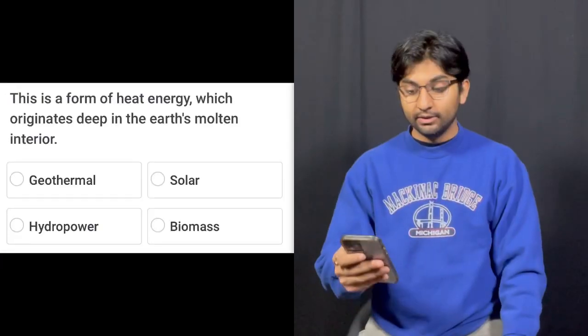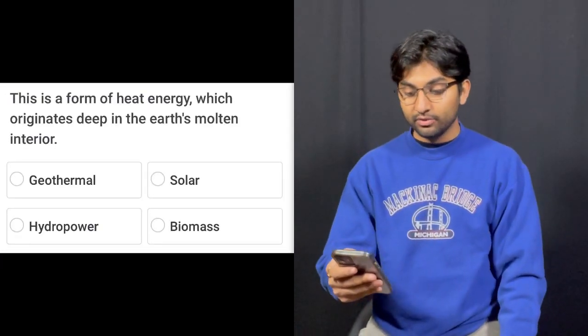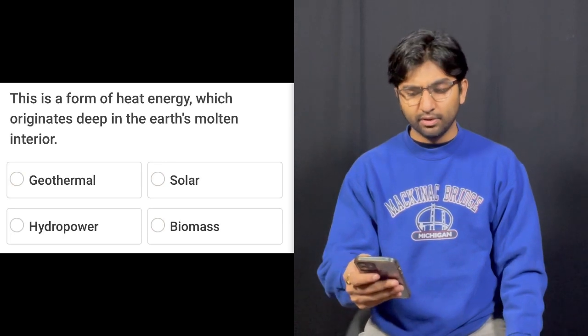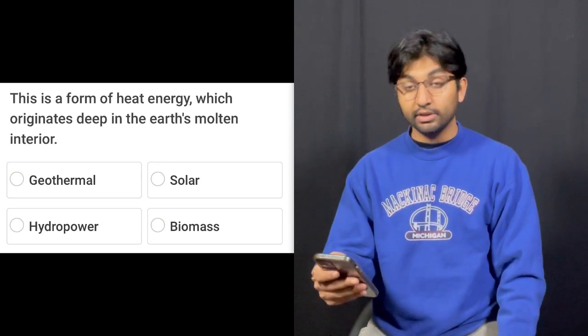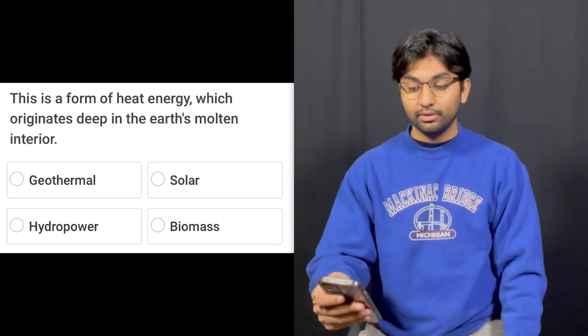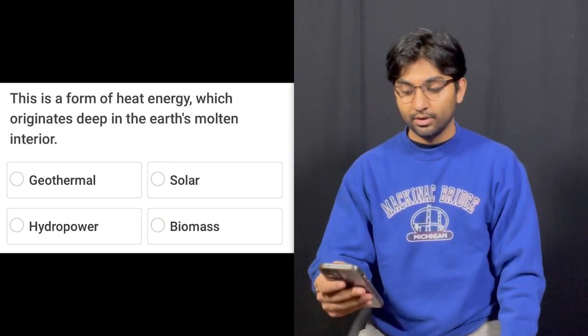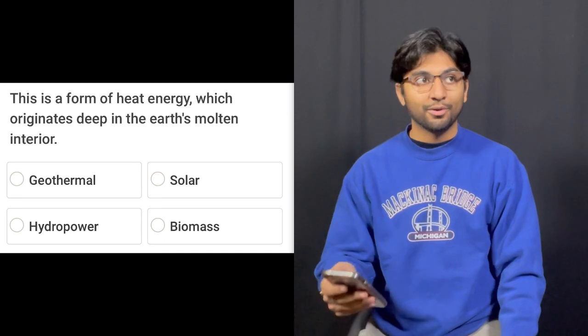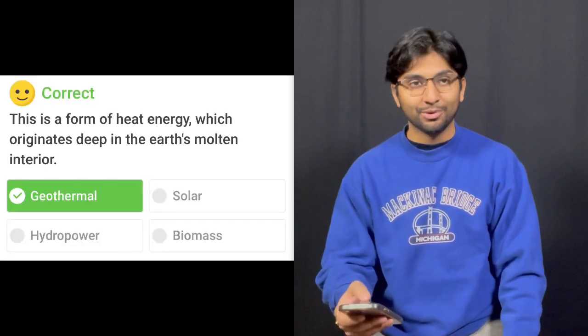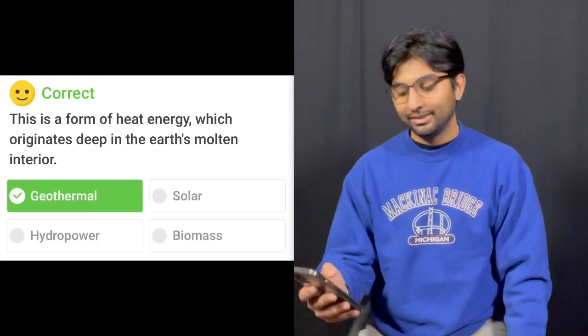Question number ten: This is a form of heat energy which originates deep in the Earth's molten interior. Geothermal, solar, hydropower, or biomass. This is geothermal — easy question. You better know your sources of energy. Energy independence is a big thing in the future.